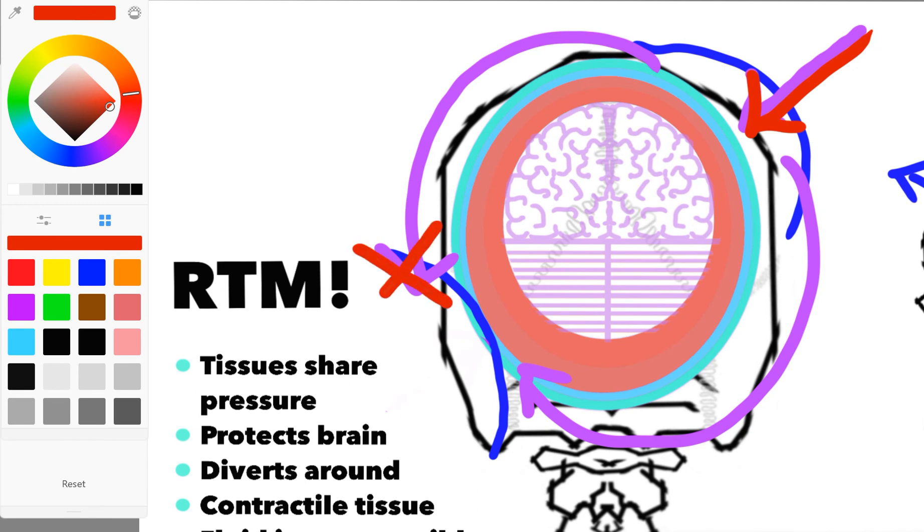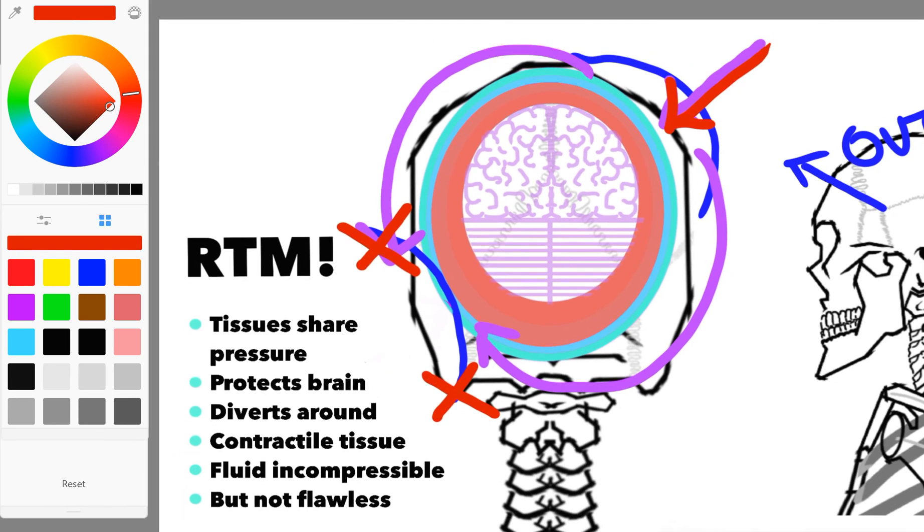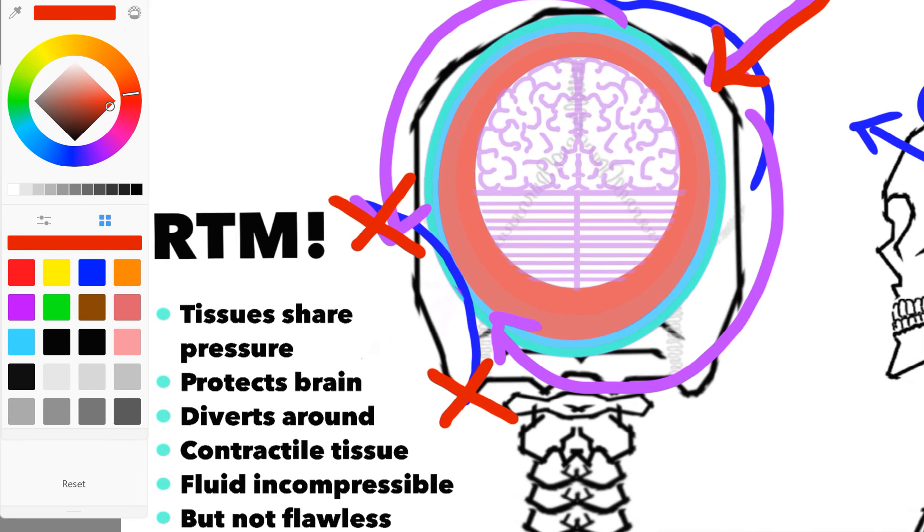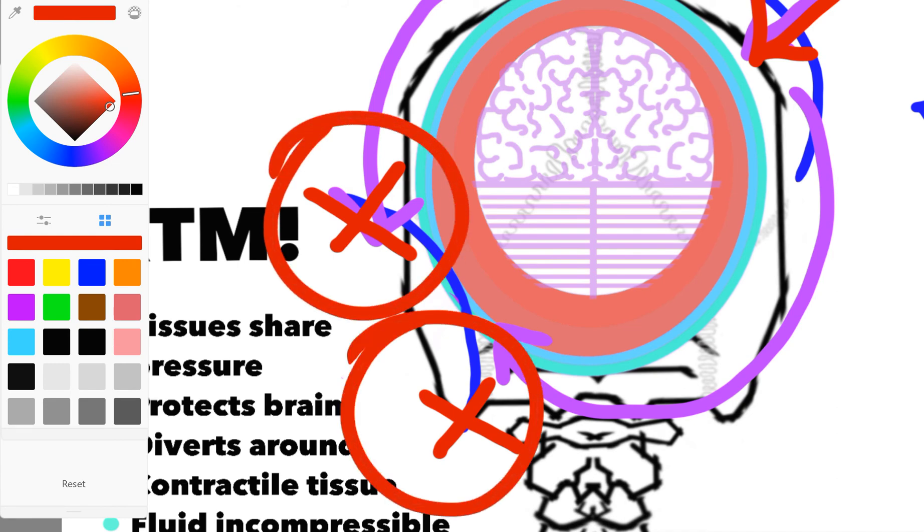We stop the movement from occurring here and here, really at the top and the bottom of the curve. Though it is a cranial curve, it still counts. This right here becomes the pathway of least resistance. It ends up being that by stopping the points above and below - and this is true of really any curve in the body.